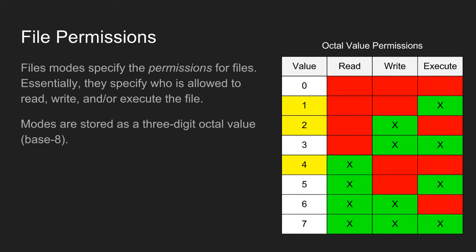Modes are stored as three-digit octal values, which is base 8. So the octal value zero means you can't read, write, or execute the file. One means you can just execute it. Two means you can just write to it. Four means you can just read it. Now if you want to combine these you just add them together — so if I want to read and write I take two and four and add them to get six, which is for reading and writing.